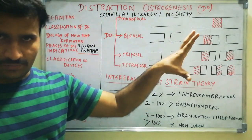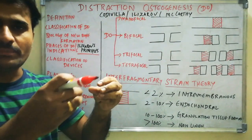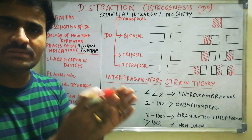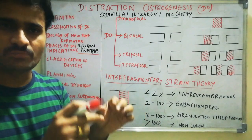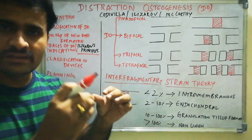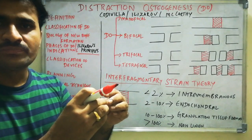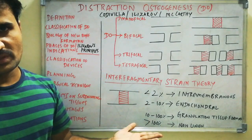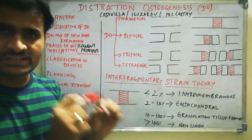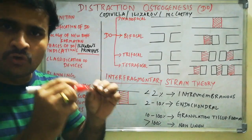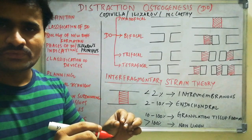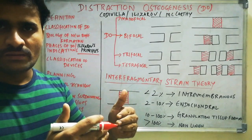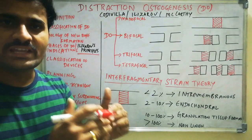As the name suggests, osteogenesis means bone formation. Distraction is nothing but application of tensile forces. So distraction osteogenesis is the bone formation between two vascularized bone segments by gradual application of tensile forces.